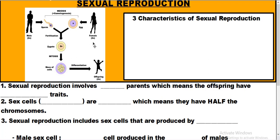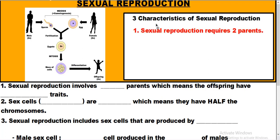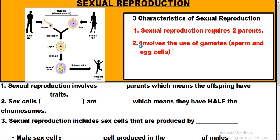Let's kick off with the three characteristics of sexual reproduction. First, we have two adults — a male and a female — so in sexual reproduction two parents are required. The reason two parents are required is because sexual reproduction involves the use of gametes, which are sperm and egg cells.